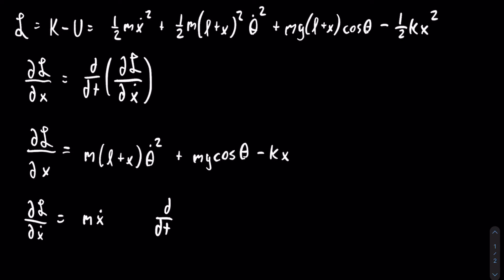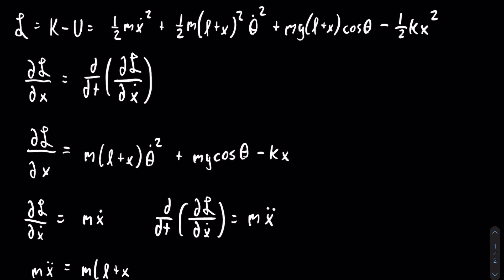We take the time derivative of the partial of the Lagrangian with respect to x dot, and that is just equal to m x double dot. Plugging into our equation, we get that m x double dot is equal to m times the quantity l plus x, times theta dot squared, plus mg cosine of theta, minus kx.